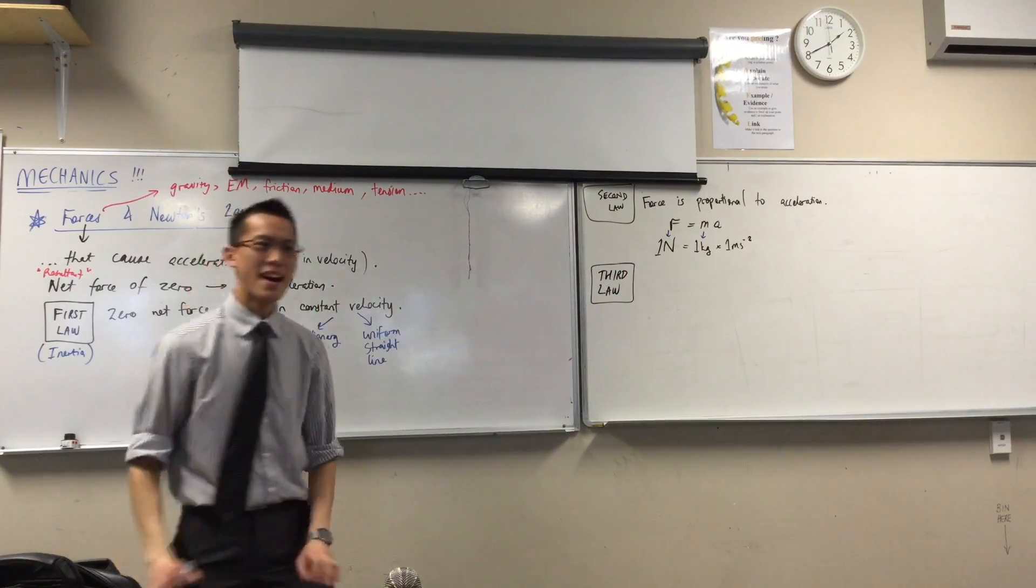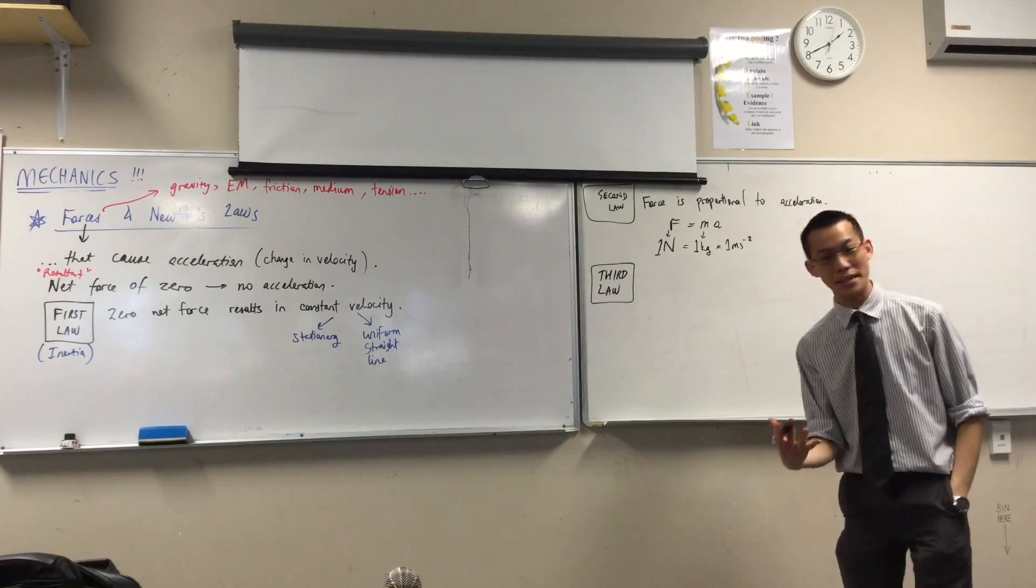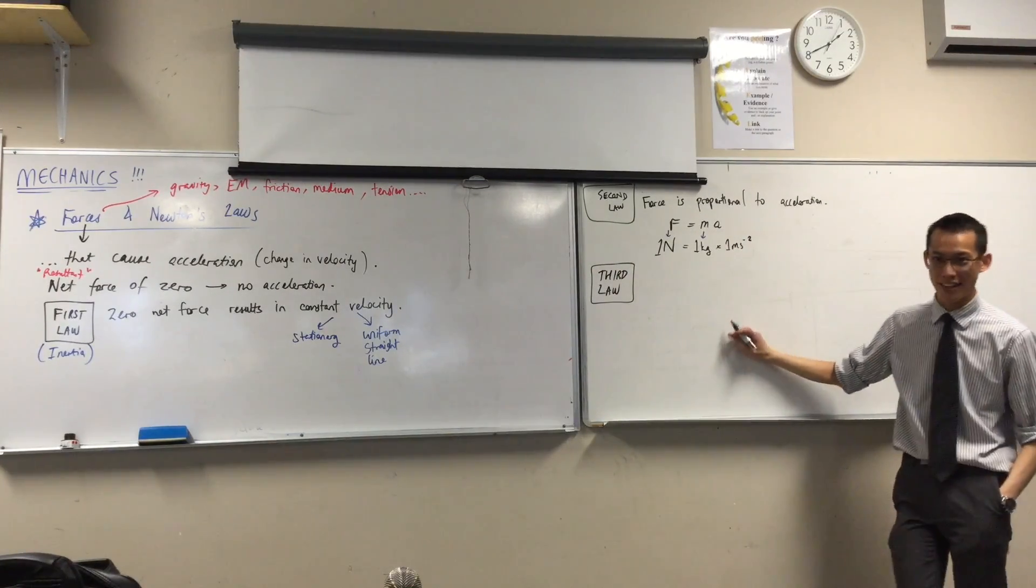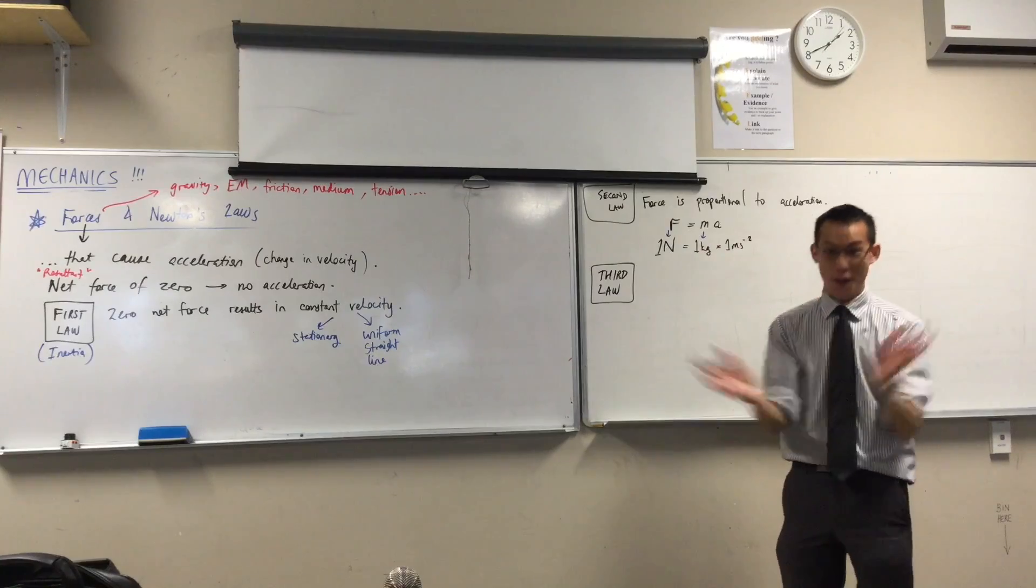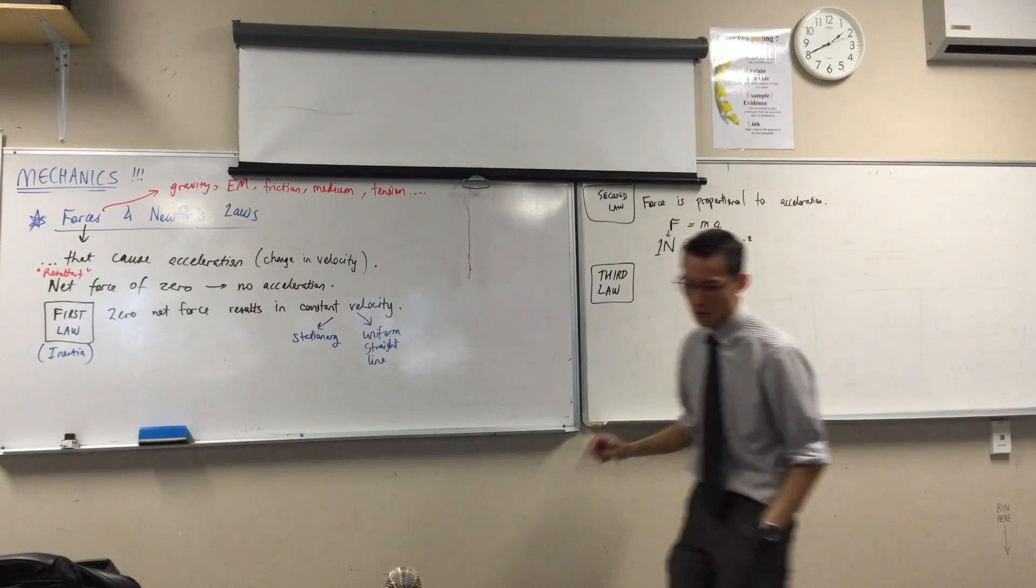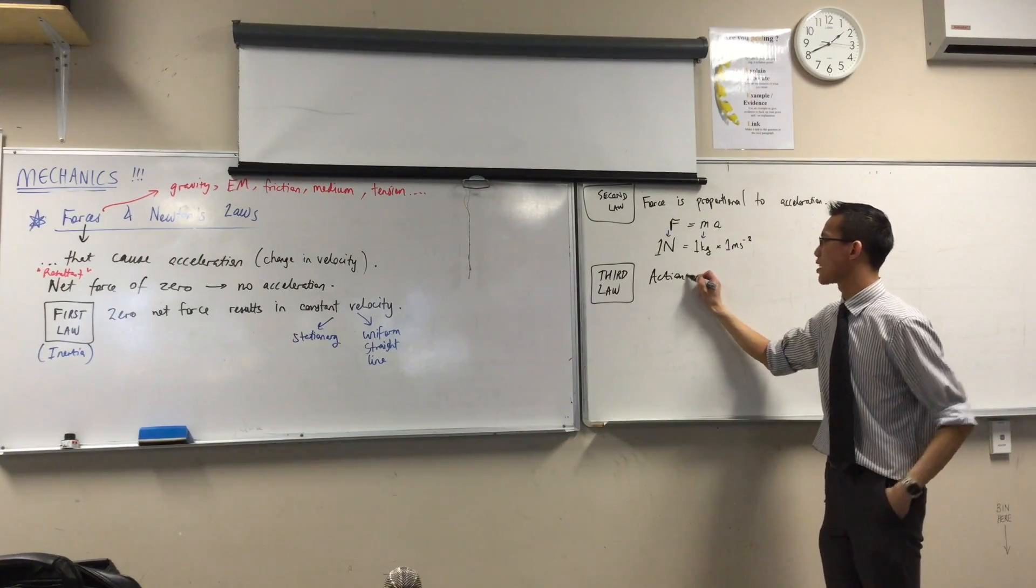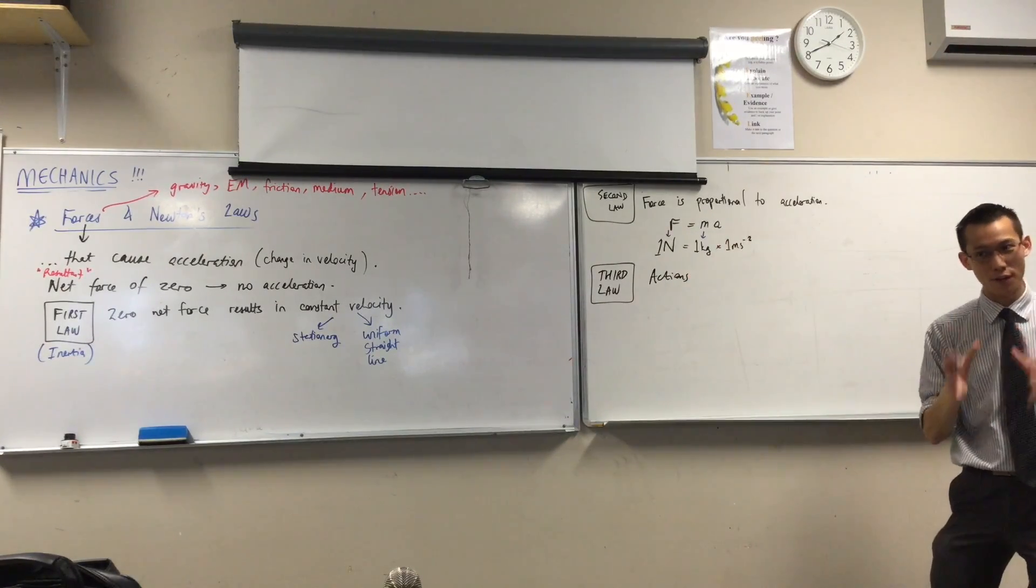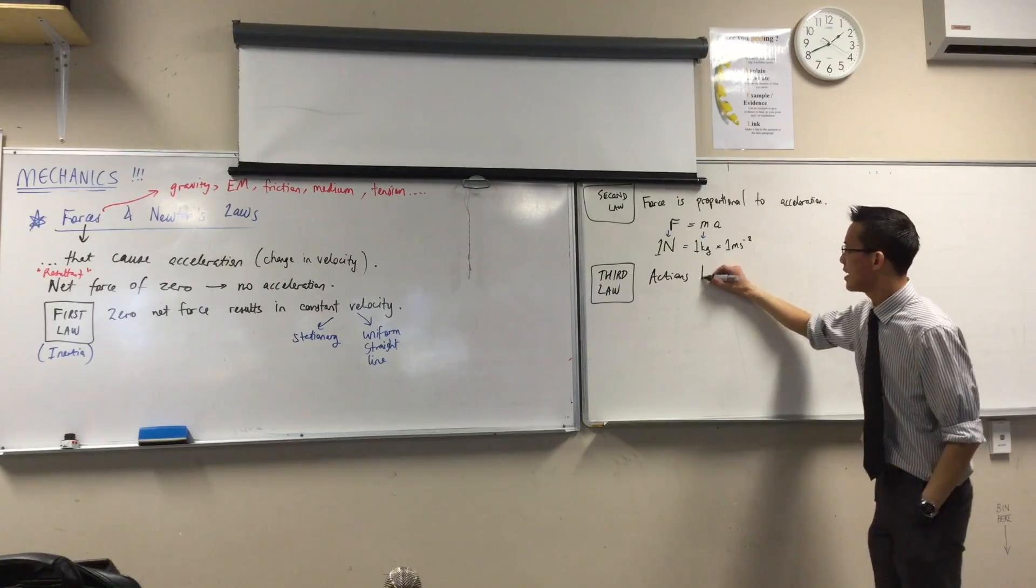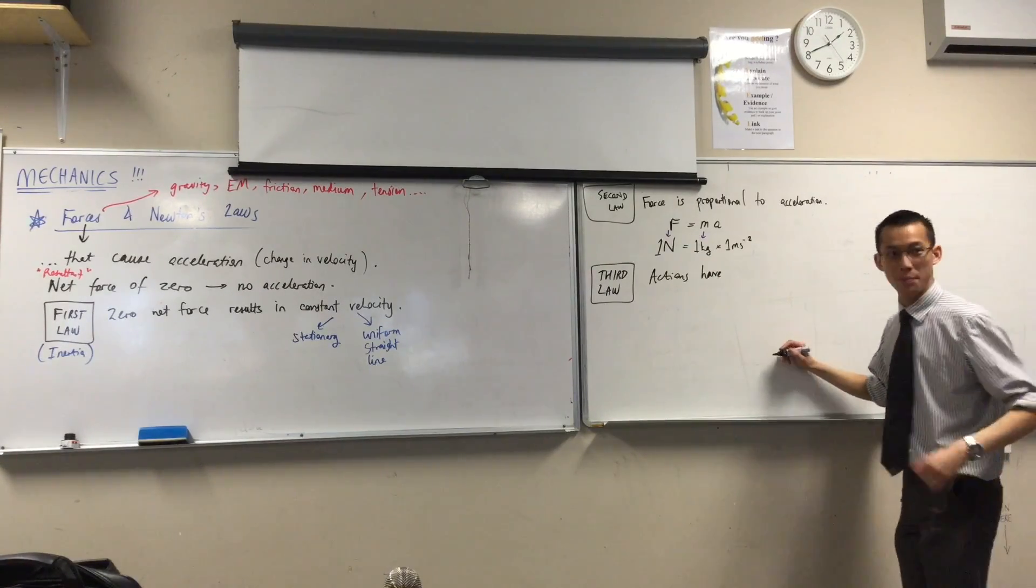Now, the third law has a very famous and pithy sort of summary statement of it and I'm going to boil it down even further than that because I just want to have as little as possible to remember. Have I got five words again? Yeah, I got five words again. My most boiled down version of Newton's third law of motion is that actions have, can someone tell me? Equal, opposite reactions.